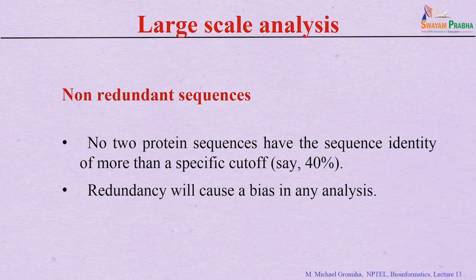If you have 100,000 sequences, you have more data and can decrease the cutoff — using 20 percent or 30 percent — so that you still get a sufficient number of sequences for analysis. If the initial dataset is small, set the cutoff accordingly. It is important to construct a completely non-redundant dataset, for example at 40 percent identity.